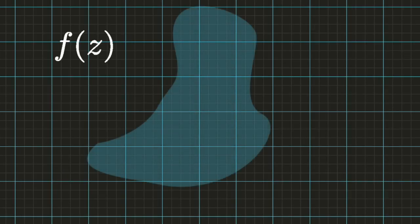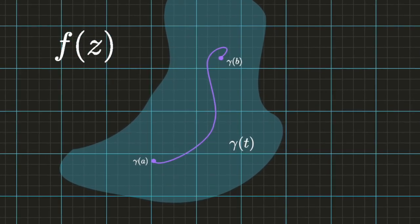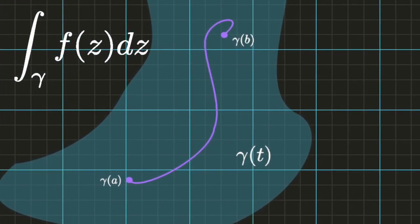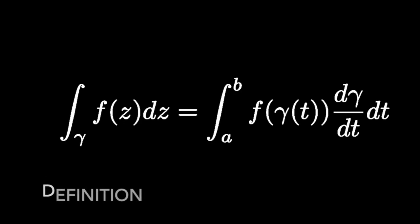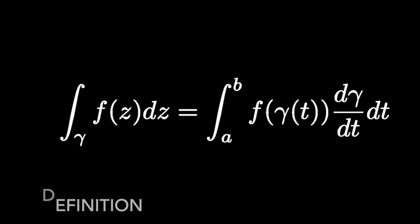Consider an open subset of the complex plane, and let f be a function which is complex analytic for every point in this set. Then by definition, the integral of f along a curve which lies in the set is defined by the following expression. Let's pause and make sure we really understand what's going on here — we're going to unpack this definition and write everything out in terms of real integrals, and then compute some examples.